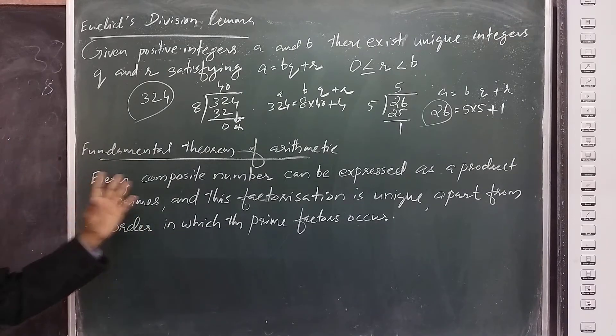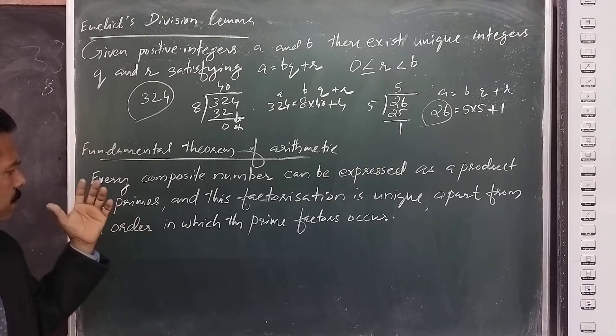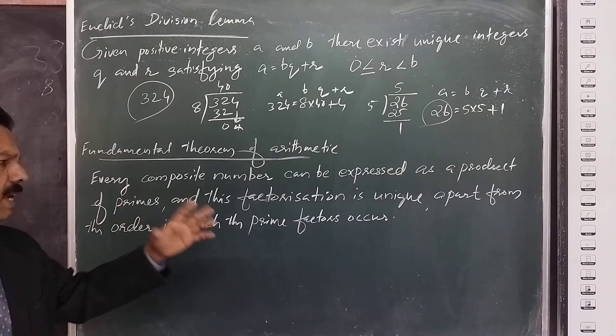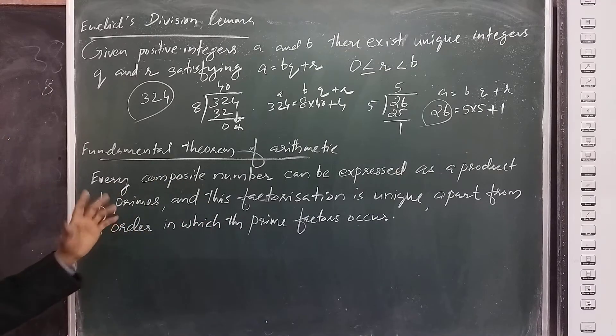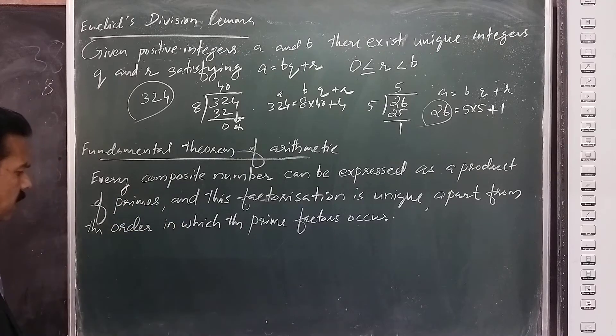Fundamental Theorem of Arithmetic: Every composite number can be expressed as a product of primes, and this prime factorization is unique apart from the order in which the prime factors occur.